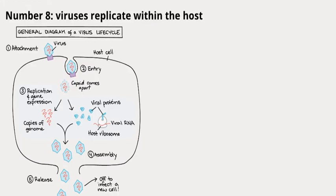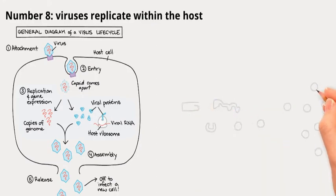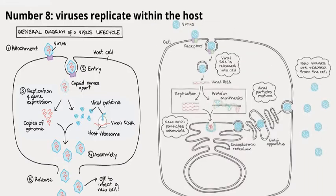These components come together to form new virus particles. Eventually, the infected cell bursts open — lysis — releasing a new generation of viruses that can infect nearby cells. This is called a lytic infection. In the second type, the virus doesn't kill the host cell but instead inserts its DNA into the host cell's own DNA.